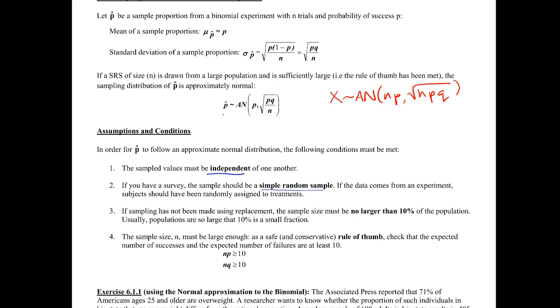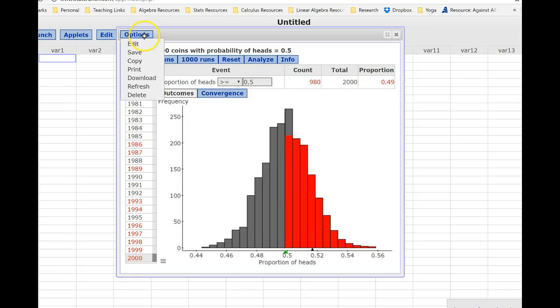And this is the same rule of thumb we had for the approximate normality on a binomial experiment. So this has not changed: np and nq both greater than or equal to 10. We talked about why that was necessary back in part 5, so that we weren't too close to the edges of our distribution and hitting up against the sides.